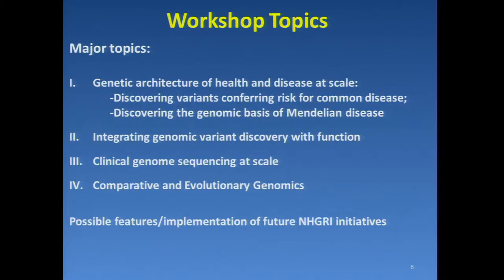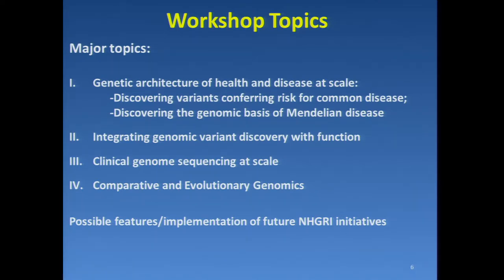The major topics I've divided into four. First, genetic architecture of health and disease at scale — discovering variants conferring risk for common disease, and discovering the genomic basis of Mendelian disease. The second large topic was integrating genomic variant discovery with function. The third was clinical genome sequencing at scale. The fourth, which was actually not a main topic but ended up being a breakout group topic, was comparative and evolutionary genomics, and there were some conclusions about that as well.